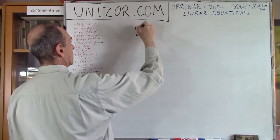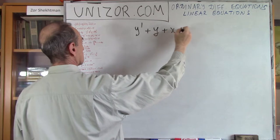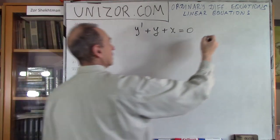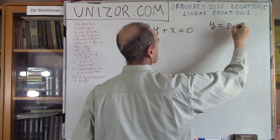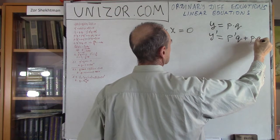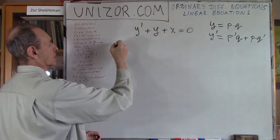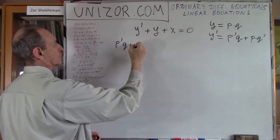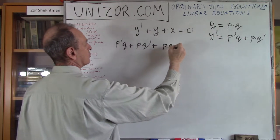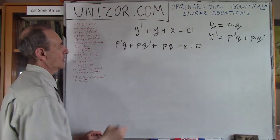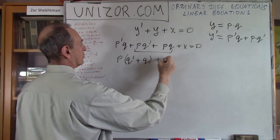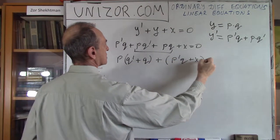My first example is: y' + y + x = 0. So let's represent y equals p times q. Then y' equals p'q + p·q'. Our equation becomes: p'q + pq' + pq + x = 0. Combining the middle part, it will be p times (q' + q) plus p'q + x = 0.